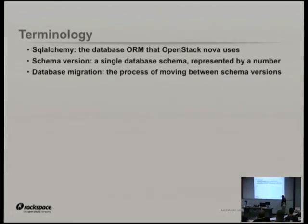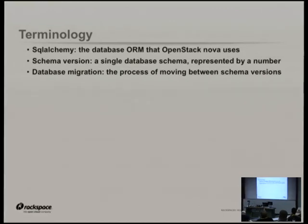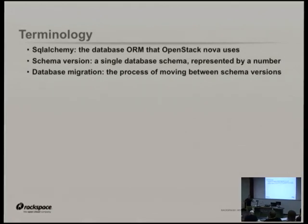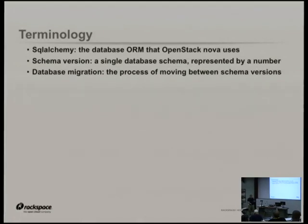Nova uses a database ORM called SQLAlchemy. It's basically a library that sits in between the database and our code, so we can say an instance is this object — go persist that in the database — and it knows how to map our object into a series of tables and relationships and all that SQL-y kind of stuff under the hood. Nova passes those ORM objects around all over the place. We're only just now deciding that's a terrible idea and replacing them, and it's a lot of work because they're kind of baked in everywhere.